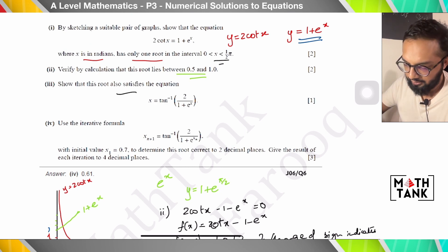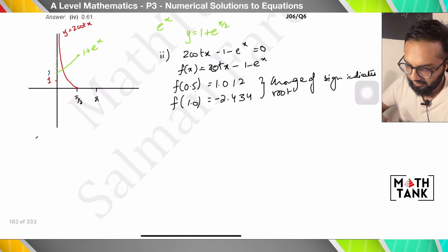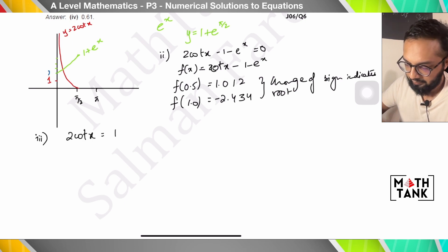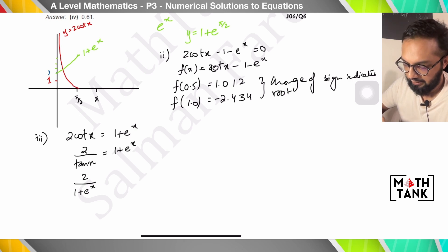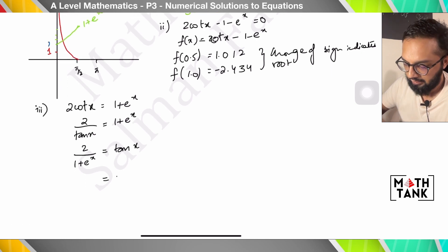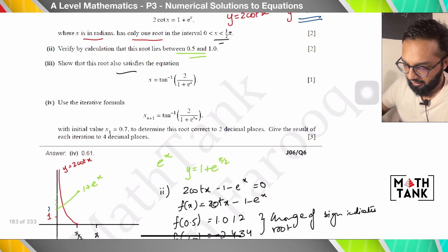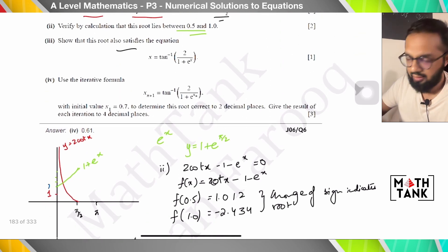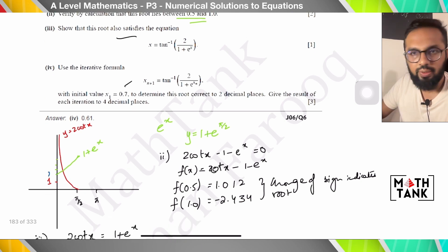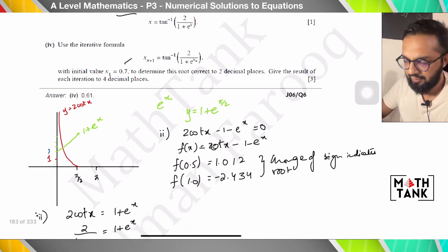Show that this also satisfies the rearranged equation. Starting from 2 cot x = 1 + eˣ, we get 2/(1 + eˣ) = tan x, therefore x = tan⁻¹(2/(1 + eˣ)). The iterative formula with x₁ = 0.7 follows from this — the iterative process has been explained several times, so I'll move on.